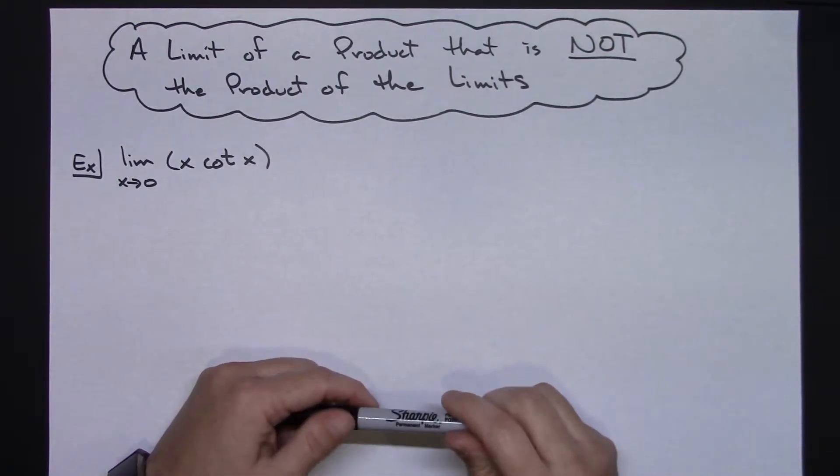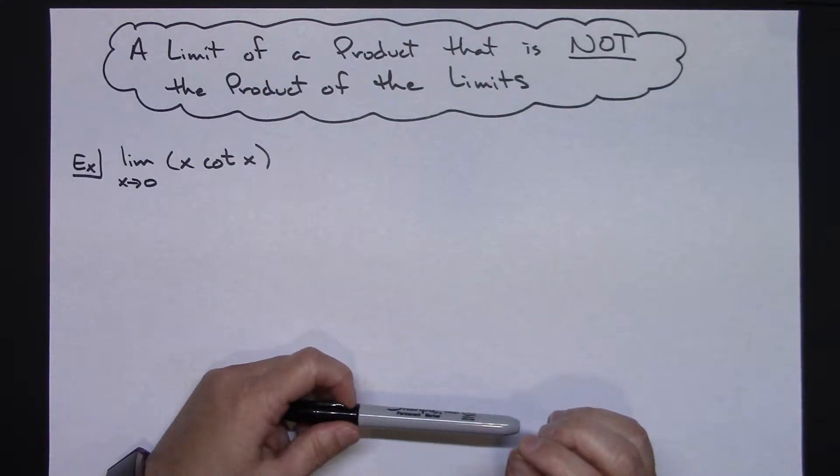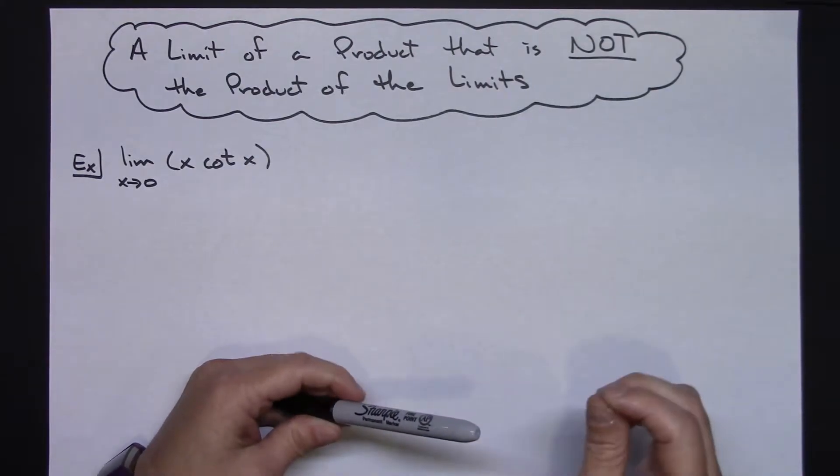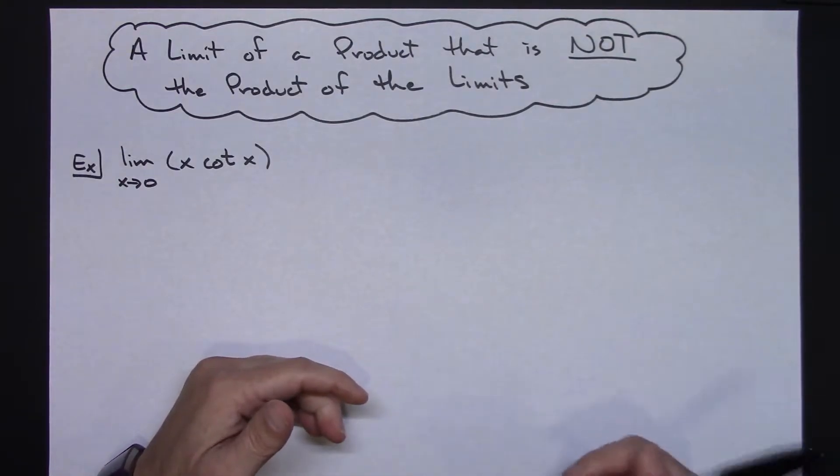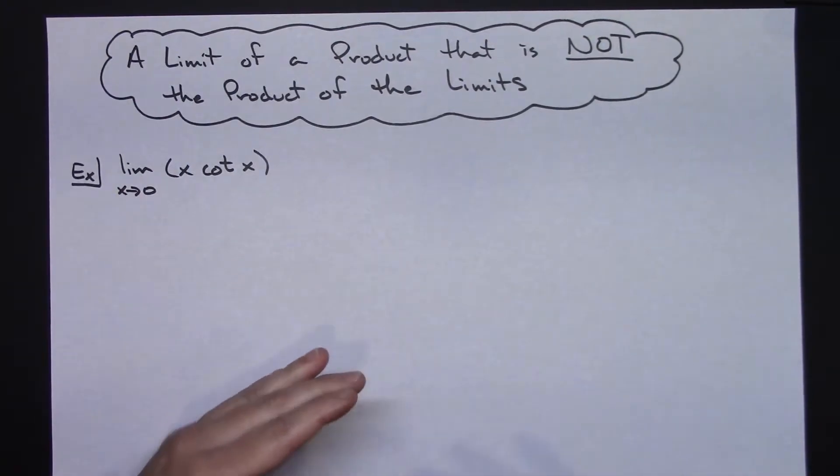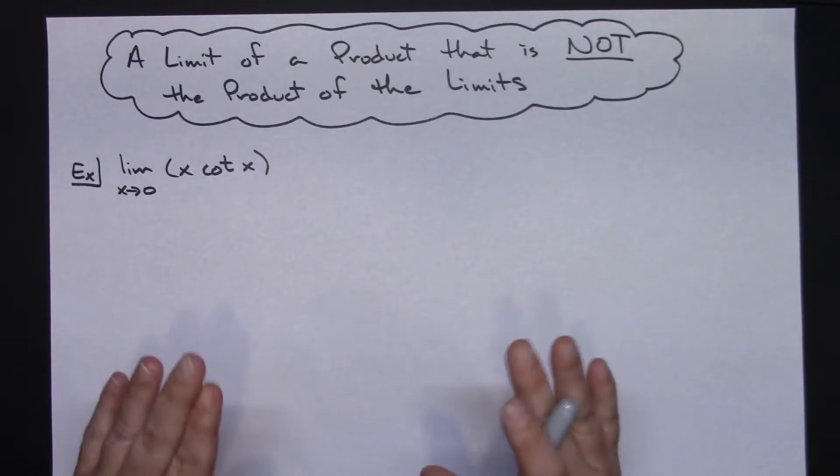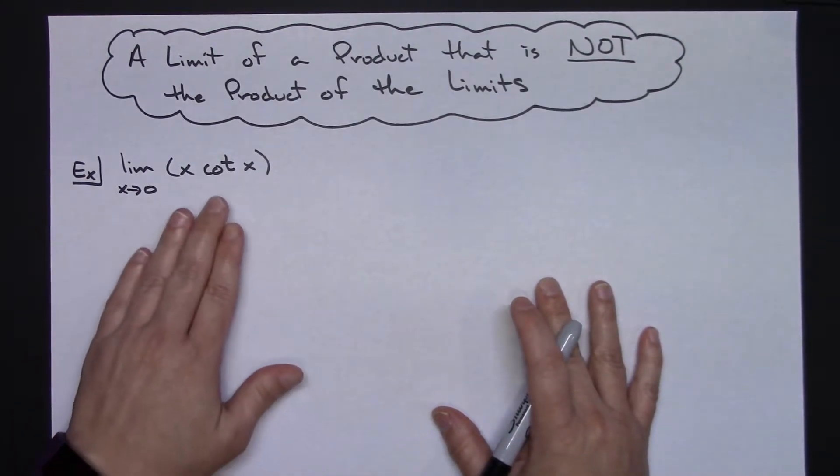In this example I'm going to be taking a look at the limit of a product that is not the product of the limits. As you're going to recall, that's going to be one of your limit theorems, and if you're not real careful you're going to get caught up in this and do this incorrectly.